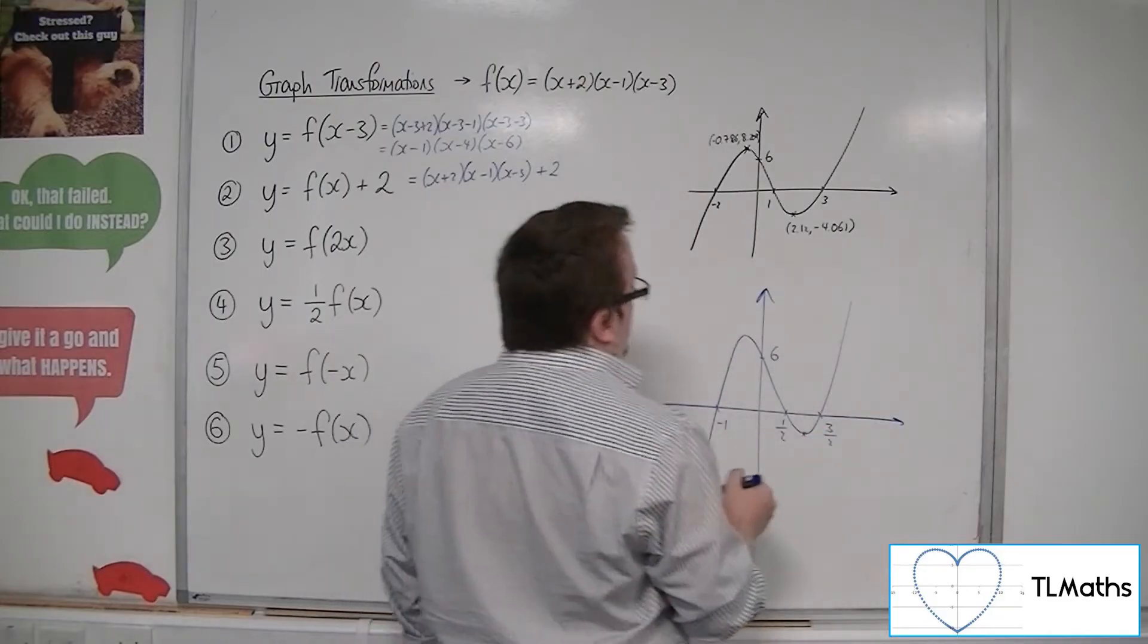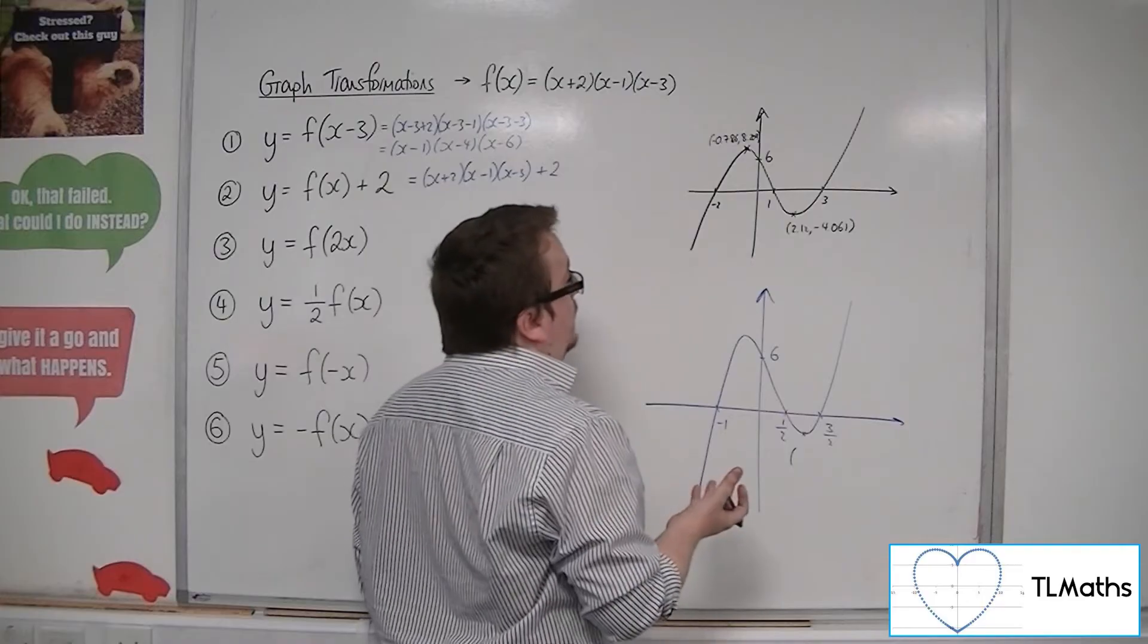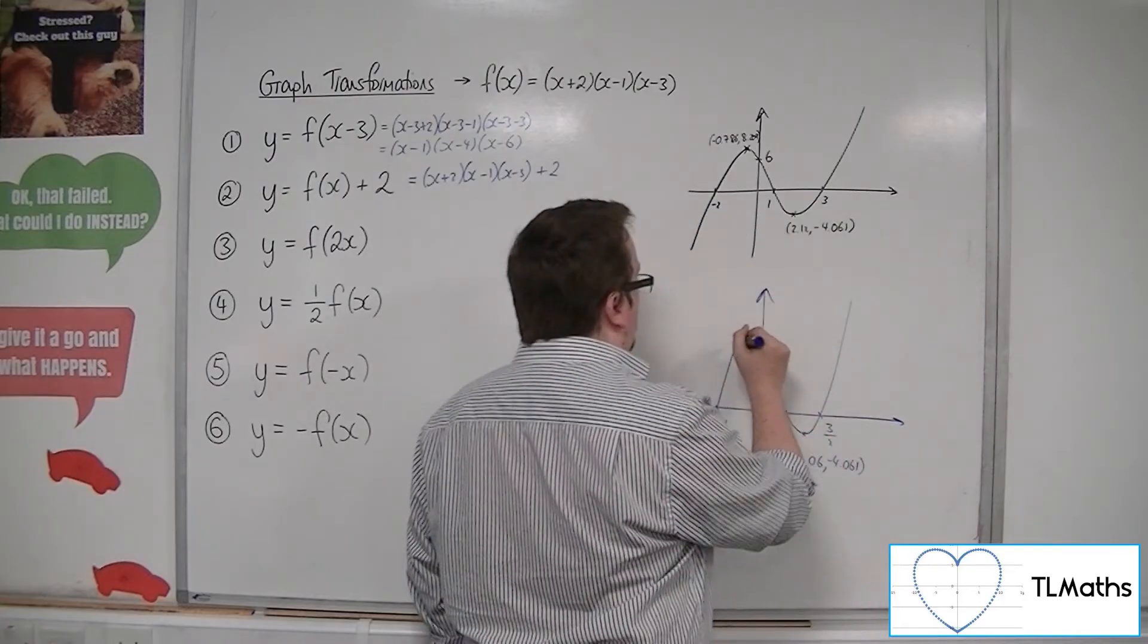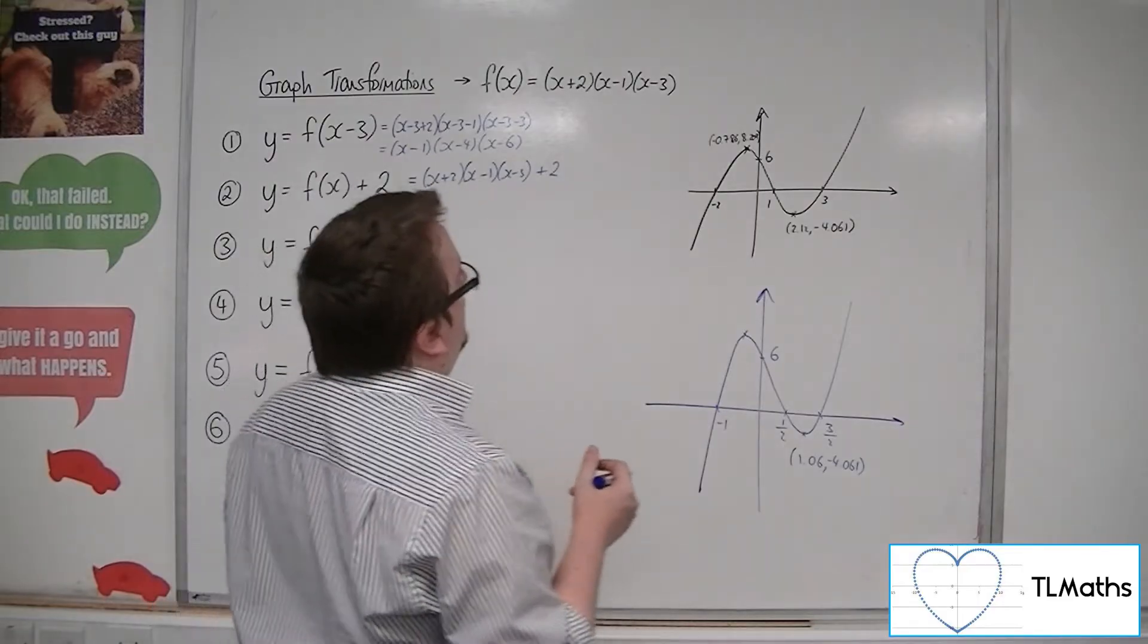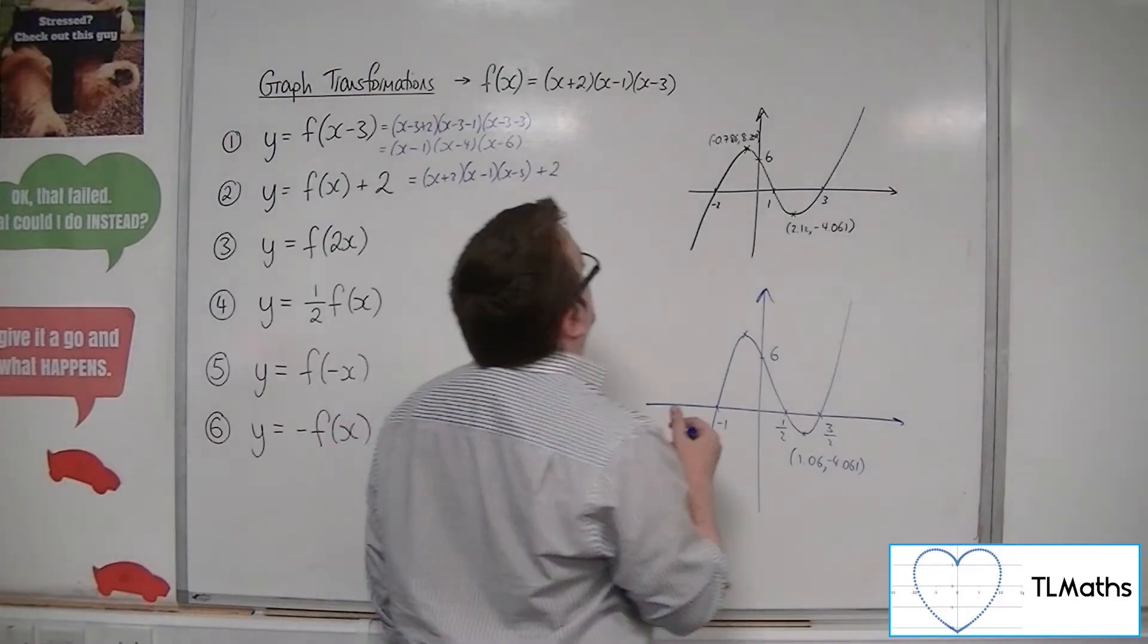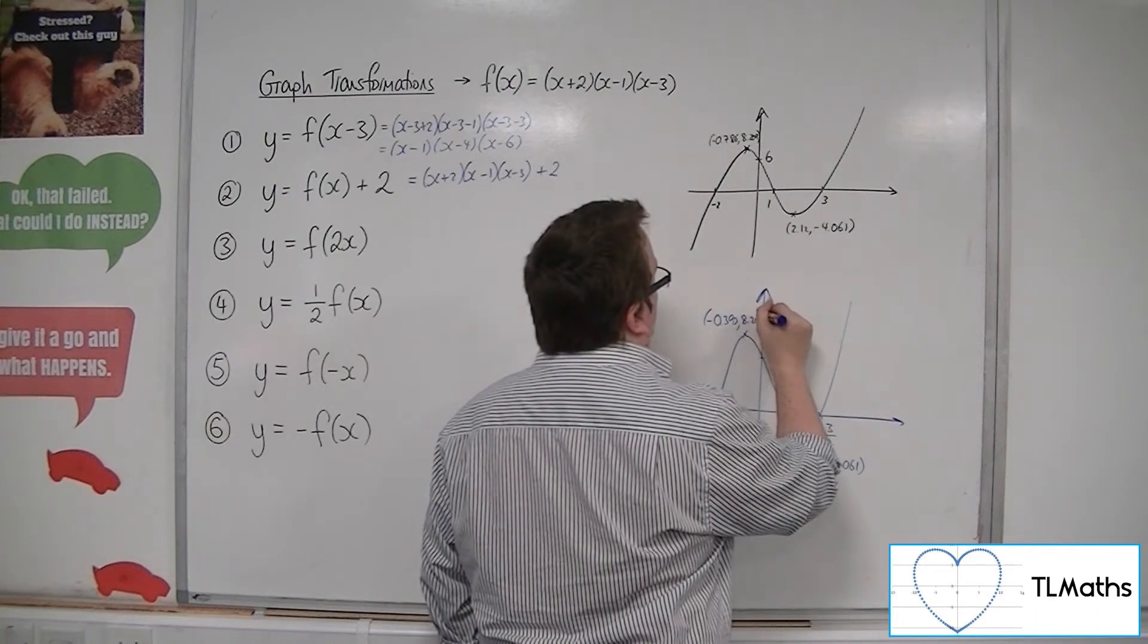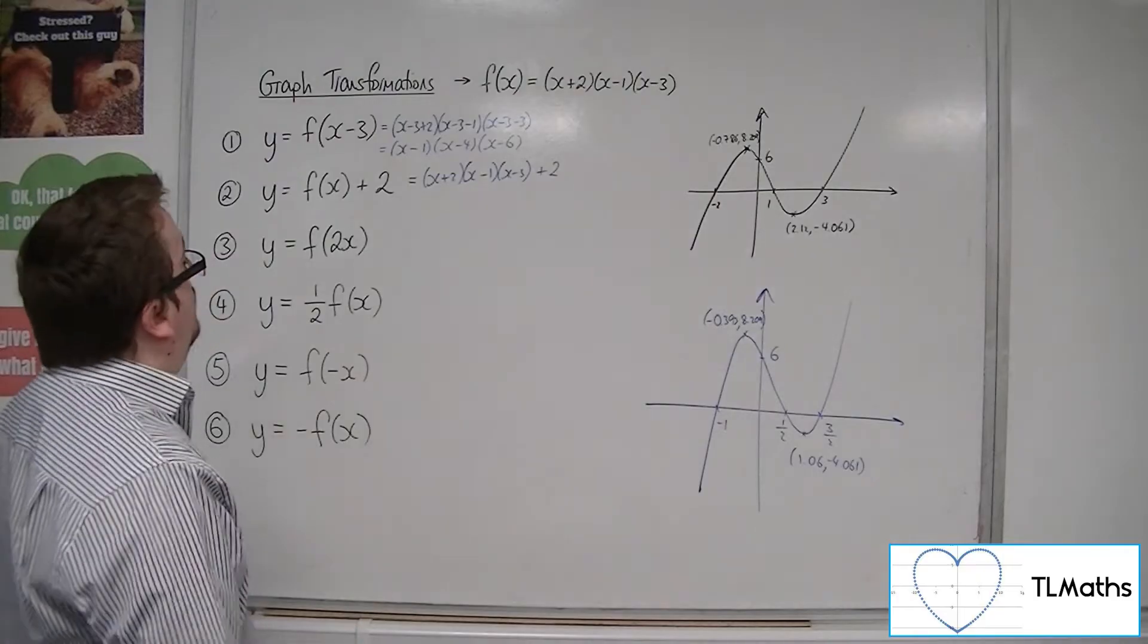The stationary point here, the turning point, will be half of the 2.12, so (1.06, -4.061). And this point will be half of that, which is -0.393, so (-0.393, 8.209). And that's what my new curve would look like.